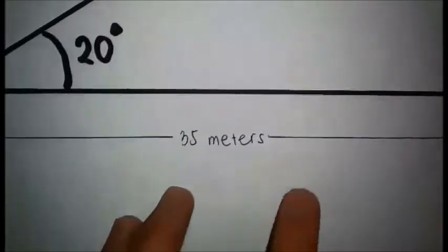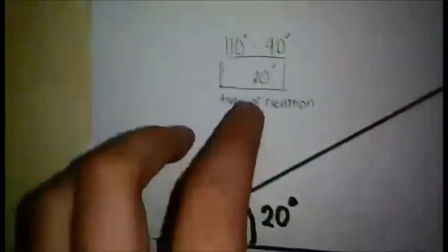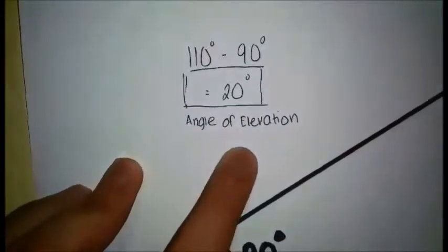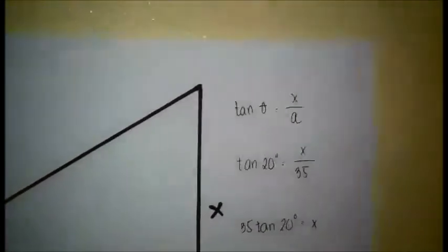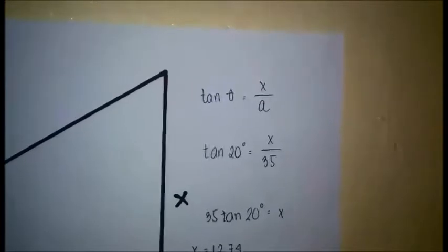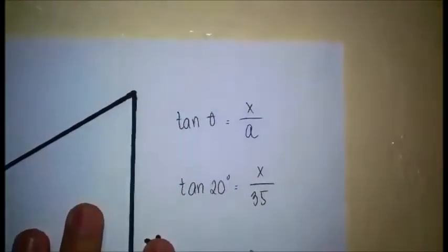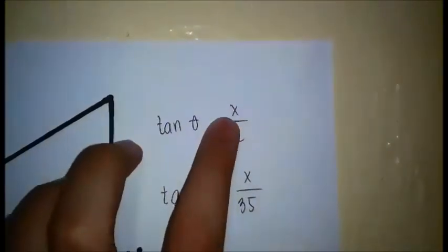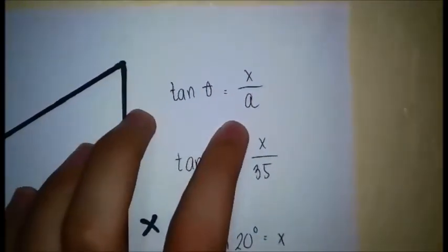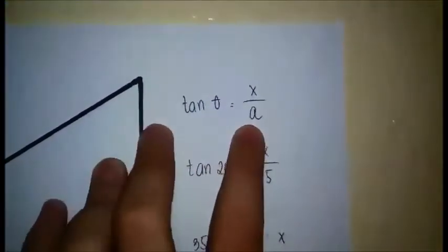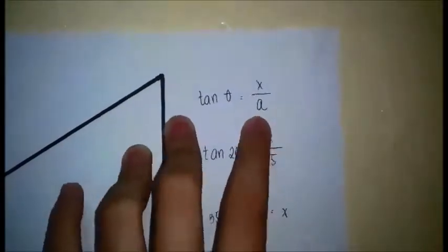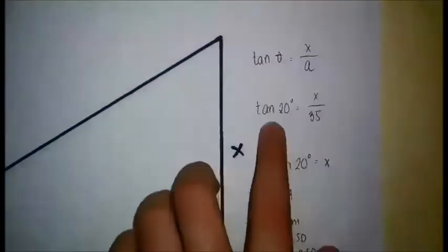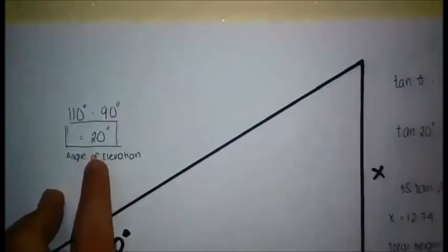Now that we have the distance and the angle of elevation, we can now solve for the height. The formula used here is tangent theta equals x over a, or alpha. After that, we substitute: 20 degrees as theta and 35 as a.